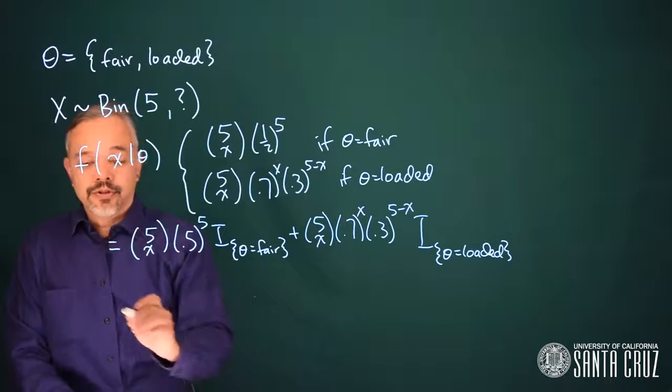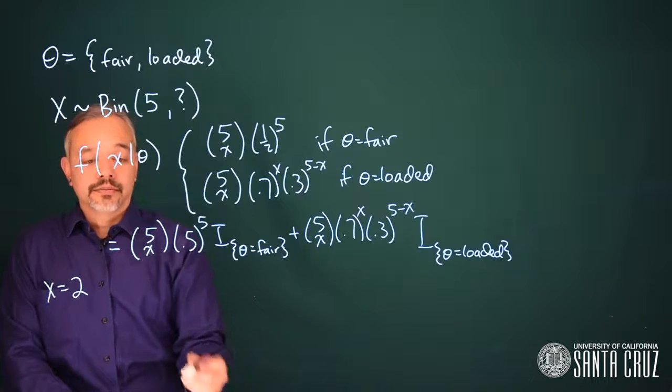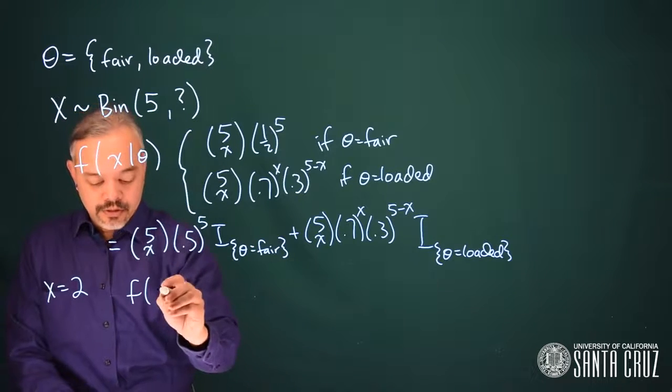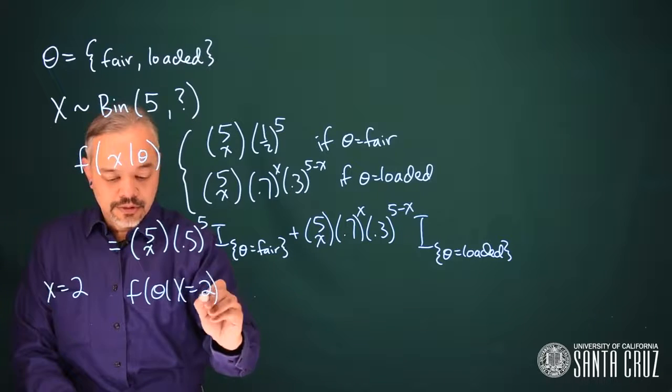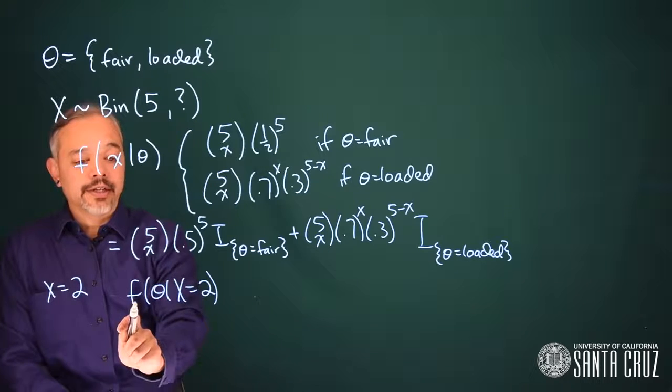Now in this case, we've observed x equals two. What's our likelihood? We can write f of theta given x equals two. In this case, I'm just going to switch back to using f instead of using a capital L for likelihood.